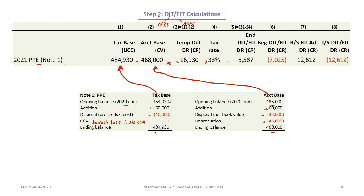To go from a beginning credit balance of seven thousand and twenty-five to a debit ending balance of five thousand five hundred and eighty-seven, we need an adjustment of twelve thousand six hundred and twelve. We debit the deferred or future tax account for twelve thousand six hundred and twelve and credit the income statement for the same amount. This is an area where students make errors, so it's a good idea to keep a T-account to track the transition from the beginning credit balance to a debit ending balance.